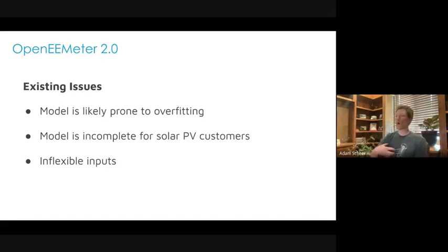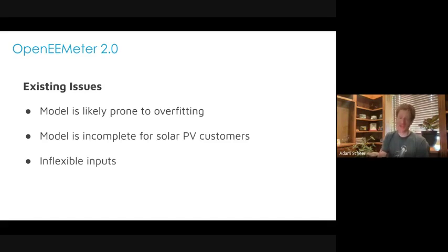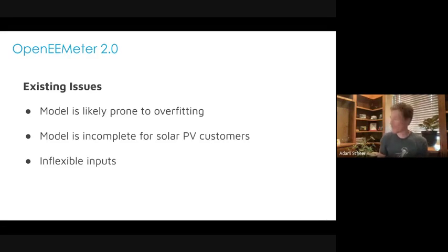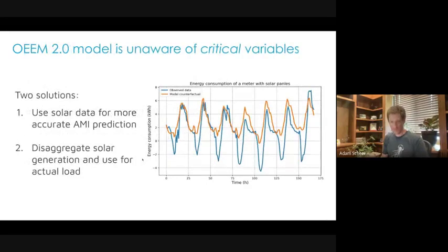The goal of the 3.0 work is to reduce the prospects of overfitting or underfitting, introduce solar irradiance variables so we can have accurate counterfactuals for both solar and non-solar customers, and make the model flexible enough to take advantage of patterns it recognizes in the data. Maybe there are other weather variables that have a major impact on energy consumption — if the model determines those variables are super important for any given customer, it should be flexible enough to take advantage of that data while still not overfitting.